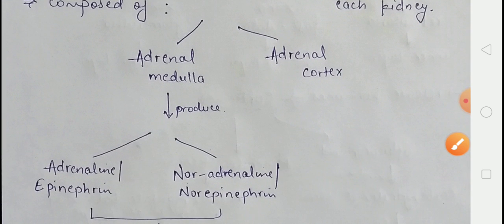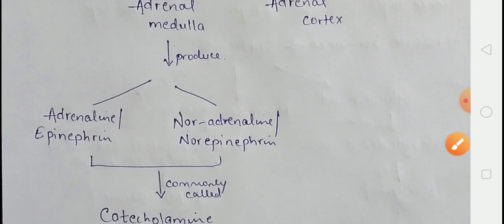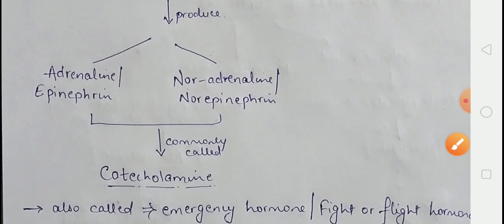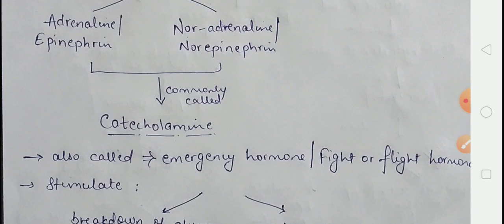The adrenal medulla releases two hormones. The first is adrenaline, also called epinephrine, and the second is noradrenaline, also called norepinephrine. Both of these hormones are collectively called catecholamines. Catecholamines are also known as emergency hormones or hormones of fight and flight, because they are released during stress or emergency situations.